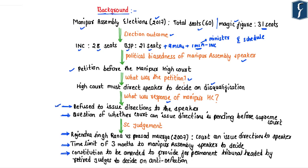The Manipur High Court refused to issue directions to the Speaker, stating that doing so would interfere with the exercise of power by a constitutional authority. The High Court also noted it was uncertain whether courts in India could issue such directions to the Speaker, as this issue was still pending before the Supreme Court. Unless the Supreme Court passed a verdict, the High Court would not issue directions. The case ultimately reached the Supreme Court.